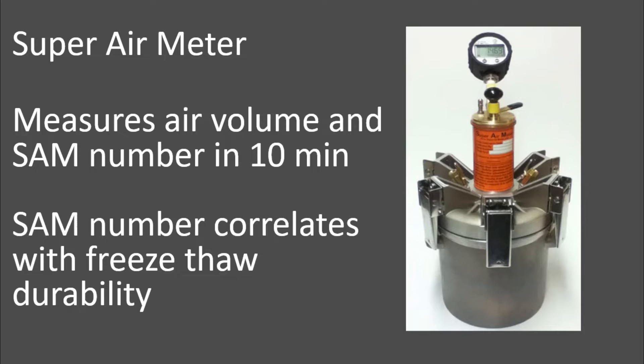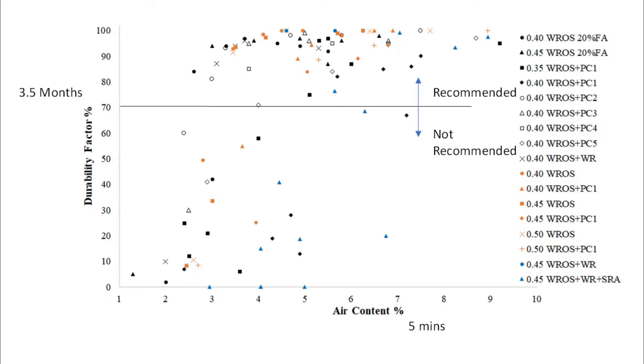Now the super air meter is your best bet to do this because it can measure all this information in the fresh concrete. So you can change it. You can tweak it. You can get it right. It will measure your air volume and it will measure your SAM number in 10 minutes or less. And the SAM number is going to correlate with freeze thaw durability. It's also going to correlate with that bubble spacing that I showed you about before. Tons of videos on my channel about this.